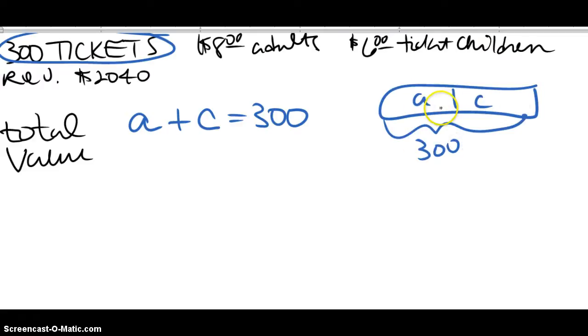So to figure out, like if you have 2 plus 4 equals 6, you can take 6 minus 4 to get 2, or 6 minus 2 to get 4. So I know that I can solve for A in terms of the 300 and C, or I could solve C in terms of these two.